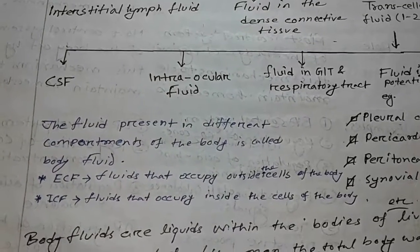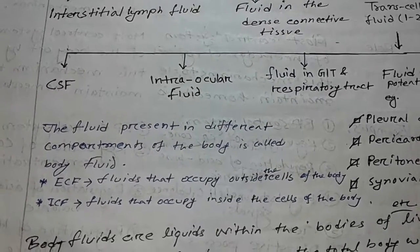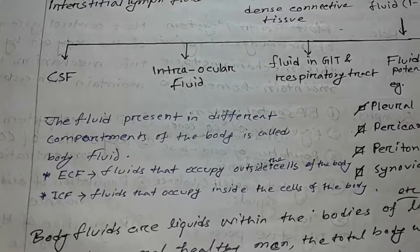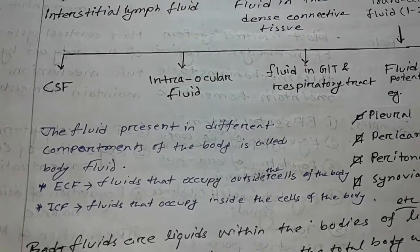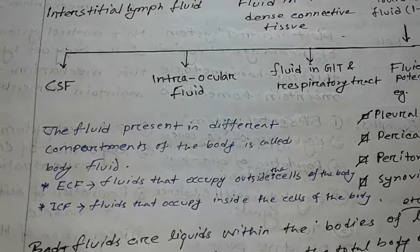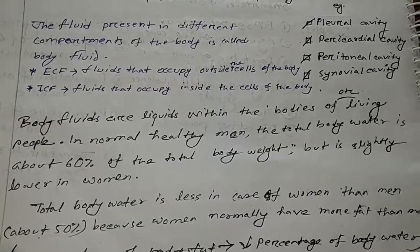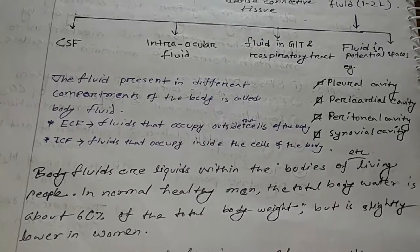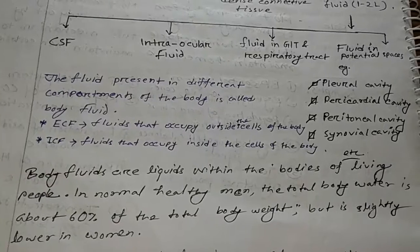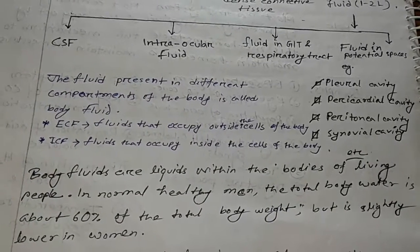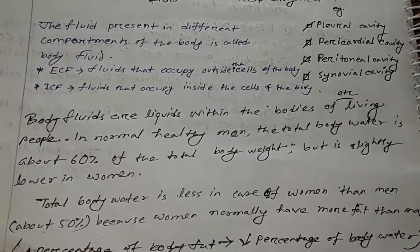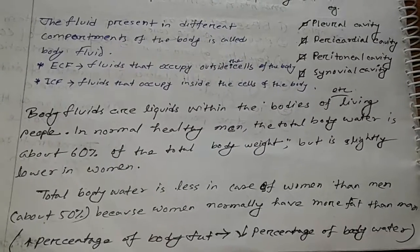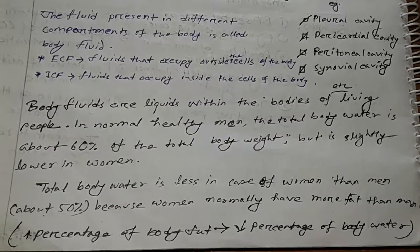Here are two simple definitions. Body fluid: the fluid present in different compartments of the body is called body fluid. ECF: fluids that occupy outside the cells of the body. ICF: fluids that occupy inside the cells of the body. In a normal healthy man, the total body water is about 60% of the total body weight. It is slightly lower in women because women normally have more fat than men.